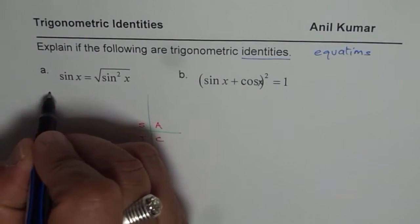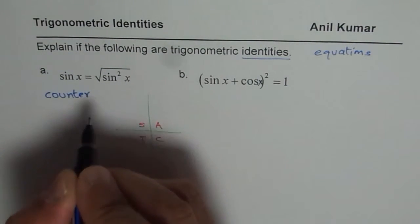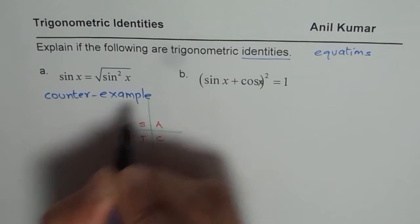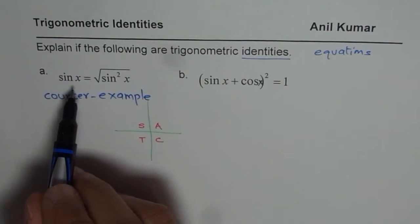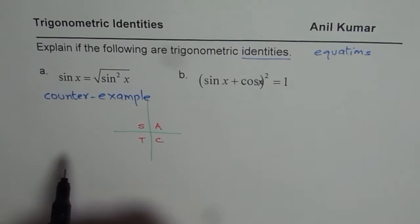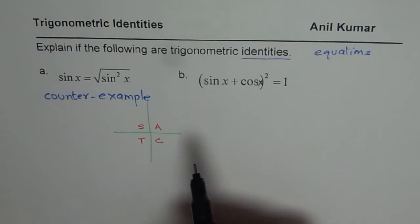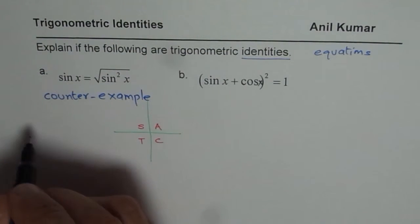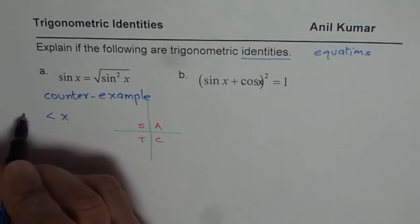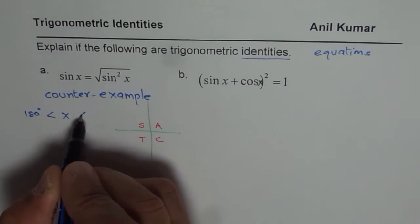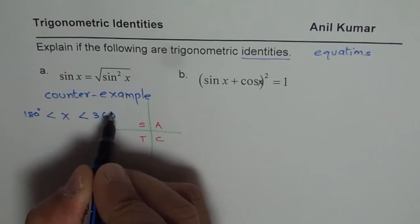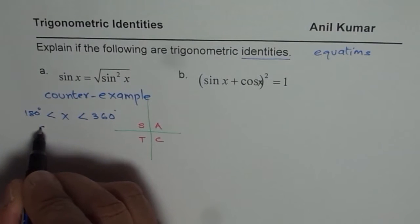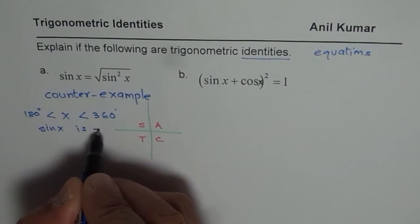Even if I give you one example which says that left side is not equal to right side, in that case, it is not an identity. In general, if angle x is greater than 180 degrees and less than 360 degrees, in that case, we expect negative value of sin. We know sin of x is negative.